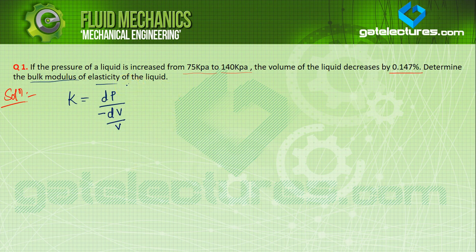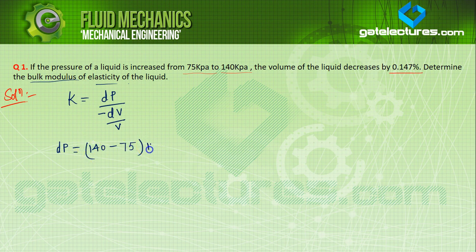According to the question, if the pressure of liquid is increased from 75 kPa to 140 kPa, the change in pressure dP equals final pressure minus initial pressure. So dP is equal to 65 kPa.